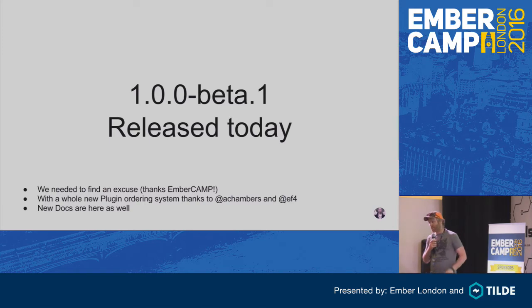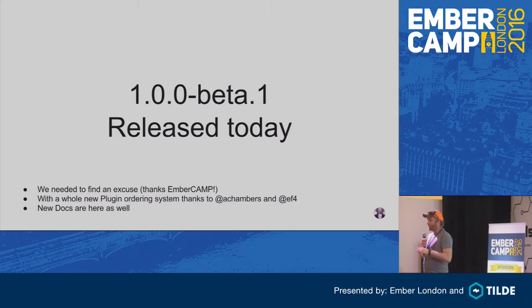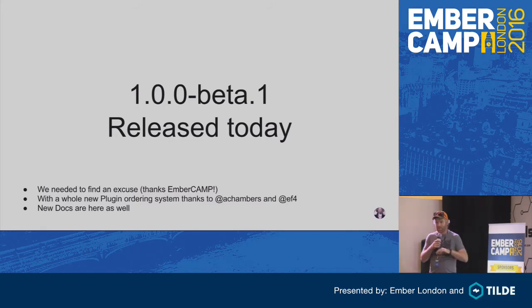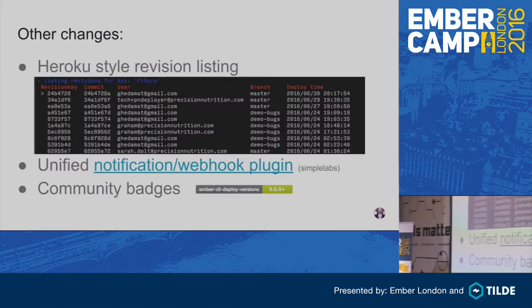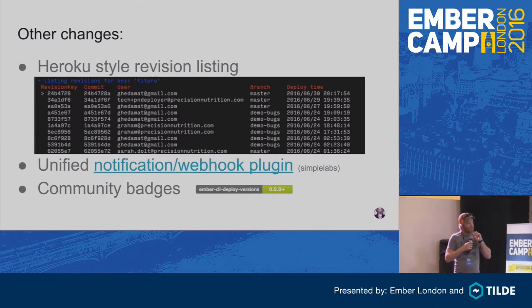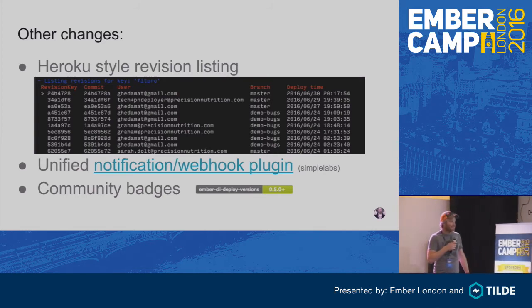We've got some new docs, since the previous ones were not particularly easy to read. Most people didn't understand that they needed to look at aliasing if they wanted to run a single plugin more than once. We've improved that to be directed more at the way you use Ember CLI Deploy. We've also improved the output for the listing of revisions to be a bit more like Heroku, thanks to Mattia.